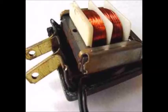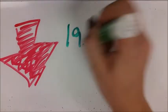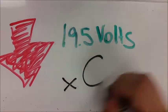You can see that the primary in this particular transformer uses very fine wire while the secondary uses much thicker wire. To drop down to 19.5 volts, there needs to be six times more turns in the primary than in the secondary.